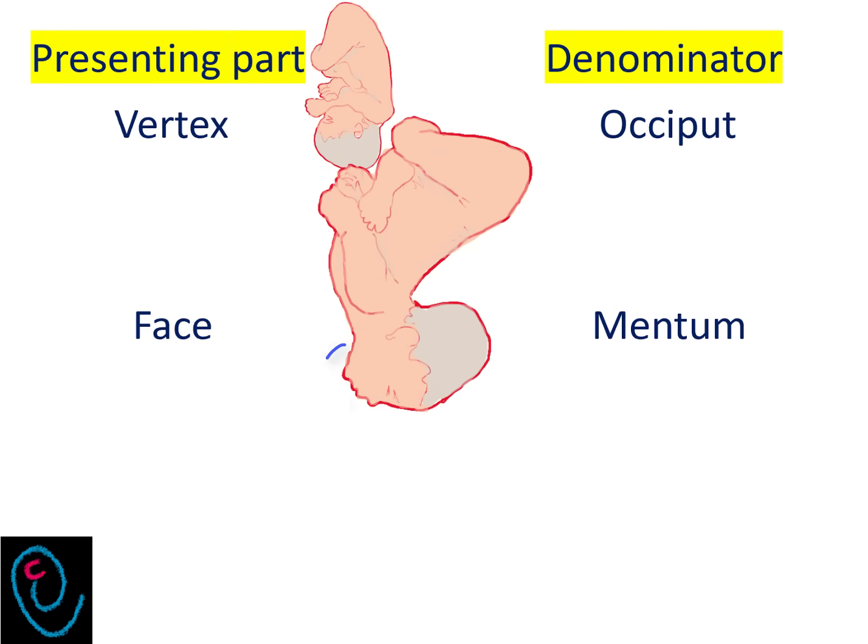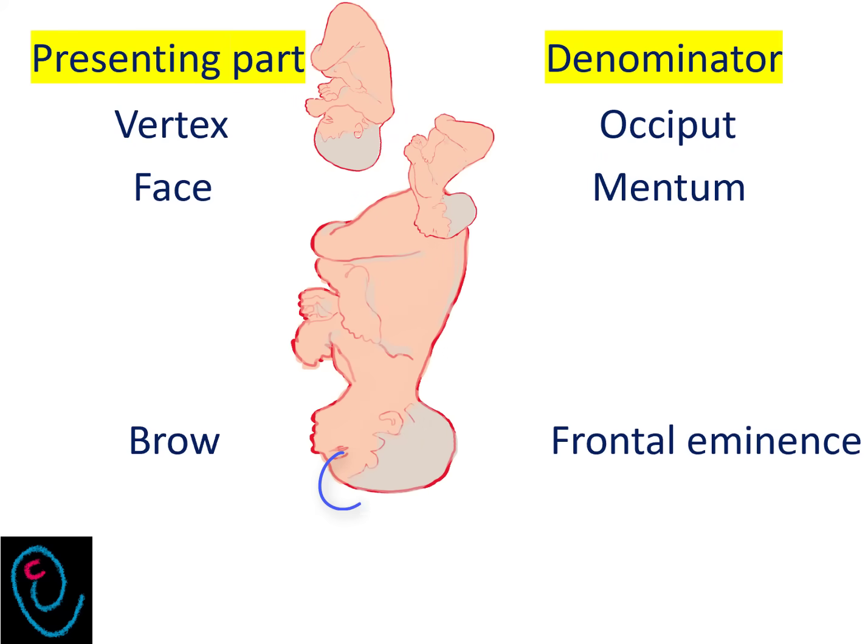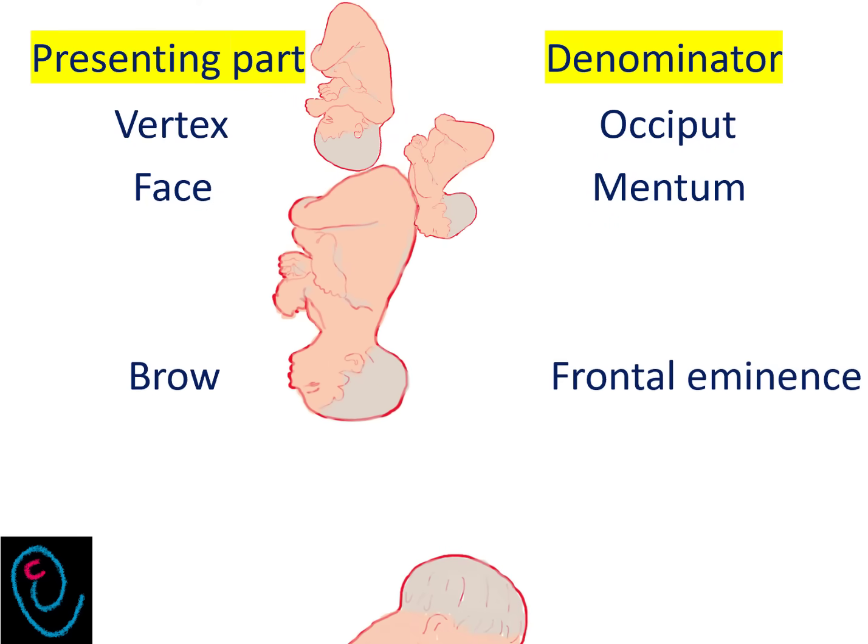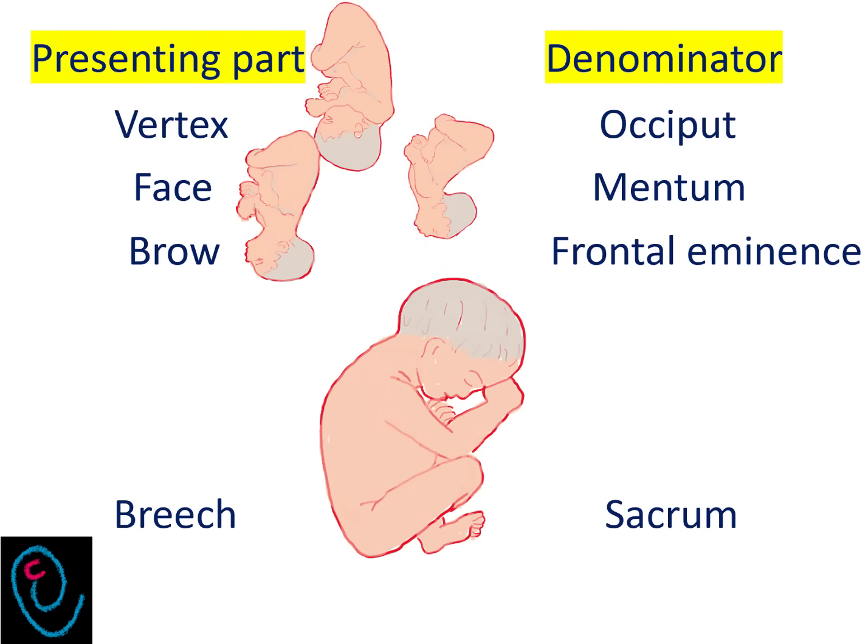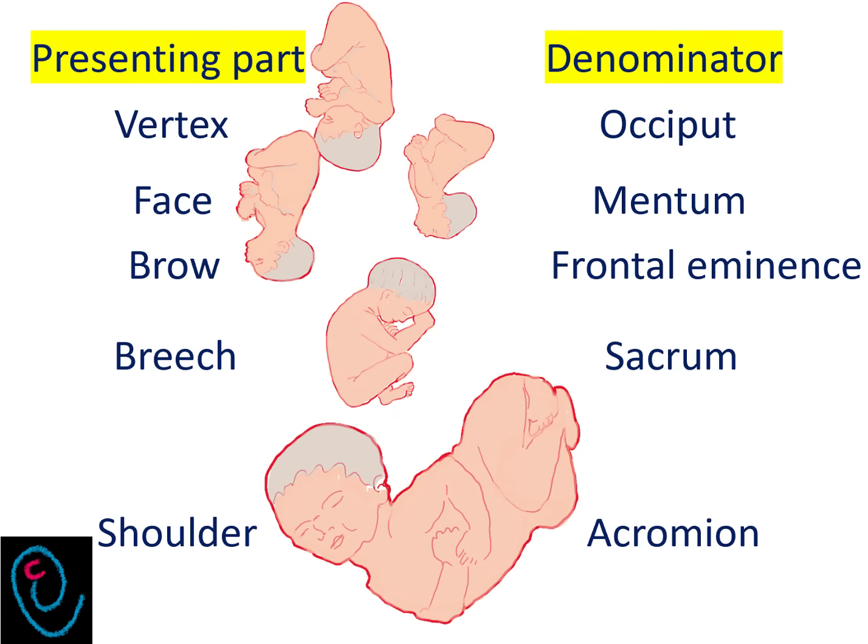In face presentation, it is mentum. In brow presentation, it is frontal eminence. In breech presentation, the denominator is sacrum. While in shoulder presentation, the denominator is acromion.